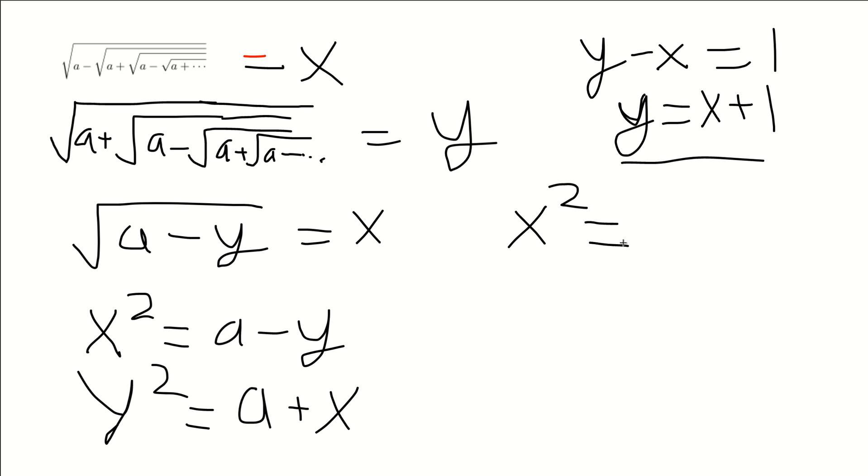So then we get x squared is equal to a minus x minus 1, and then rearranging, we can rearrange into this form, and then now we can apply the quadratic formula to finally find a nice closed form expression for this.